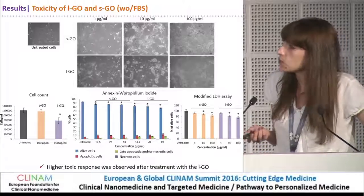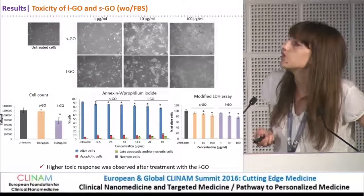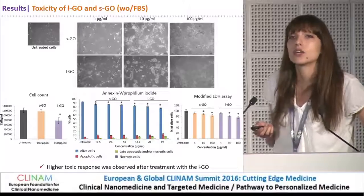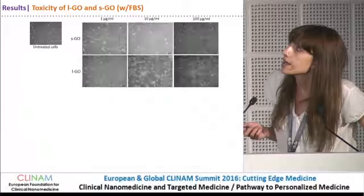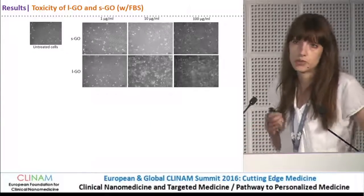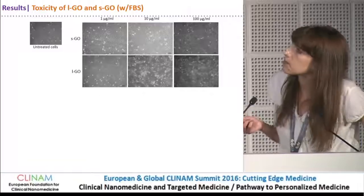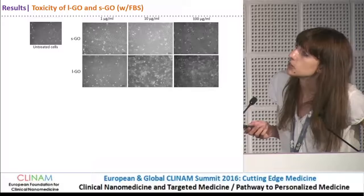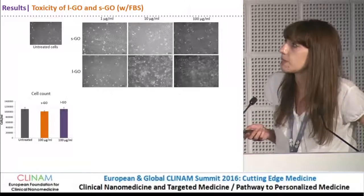Comparing large versus small graphene oxide in terms of cytotoxicity, we could see that there is a higher toxic effect of the large graphene oxide compared to the small one. We then performed the same experiments with this material in the presence of serum from the beginning of incubation, and here we could not actually see the same response, especially for the large graphene oxide in the presence of serum.